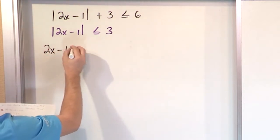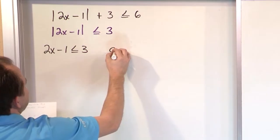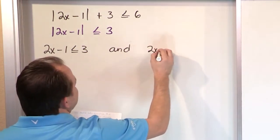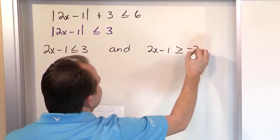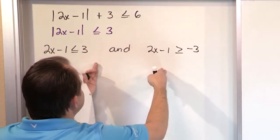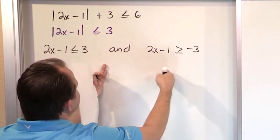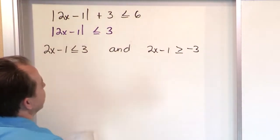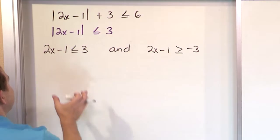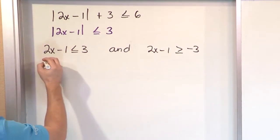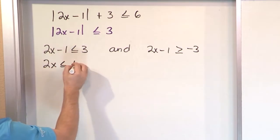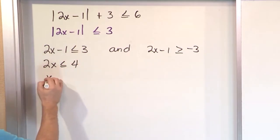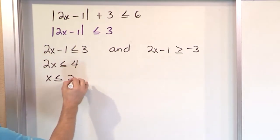It will be 2x minus 1 less than or equal to 3, and 2x minus 1 greater than or equal to negative 3. Because you bound it at plus 3 and minus 3 — it has to be in that shaded region between them. So we solve both sides: add 1, giving us 4 on the right, then divide by 2.